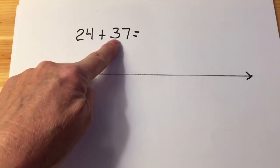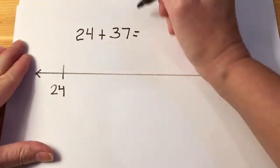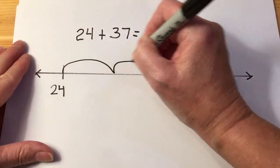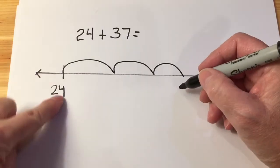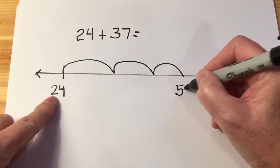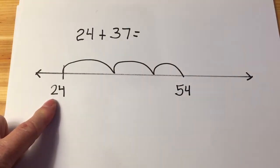I want to move my tens first, so I'm going to move one, two, three tens. I know that three tens is going to take me to the number 54.